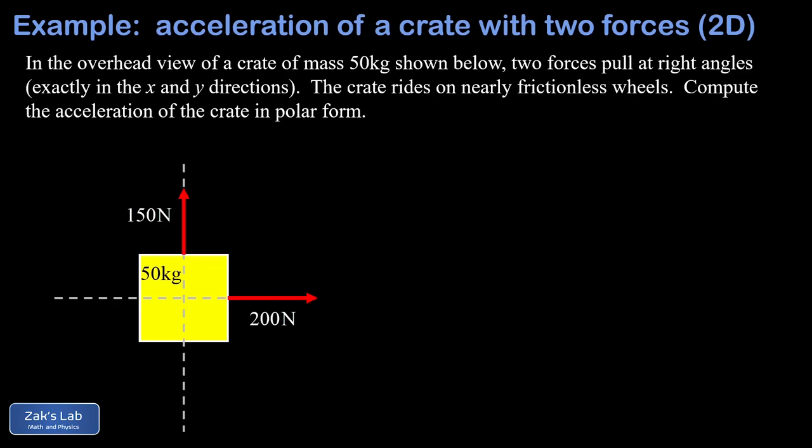So we're going to start by adding these two force vectors to get the net force. And remember, the way we add vectors is head to tail, so we pick up the 150 newton vector and attach its tail to the head of the 200 newton vector. Then the vector sum points from the tail of the first vector to the head of the second.